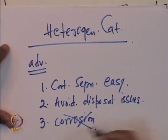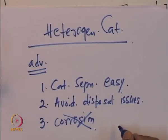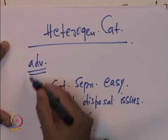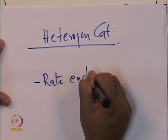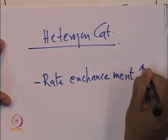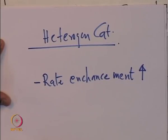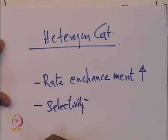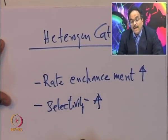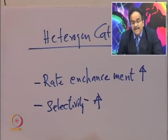Like this, there are many advantages. Apart from engineering benefits, sometimes you may get enhancement in selectivity and rates. These are practical advantages from a process point of view, and sometimes you also get advantages in terms of selectivity, yield, or performance. There may be a rate enhancement — not always, in fact most of the time the rate goes down — but we still prefer it because of the many engineering benefits. Sometimes it can increase the rate, and more than that, the selectivity towards a particular product can go up.